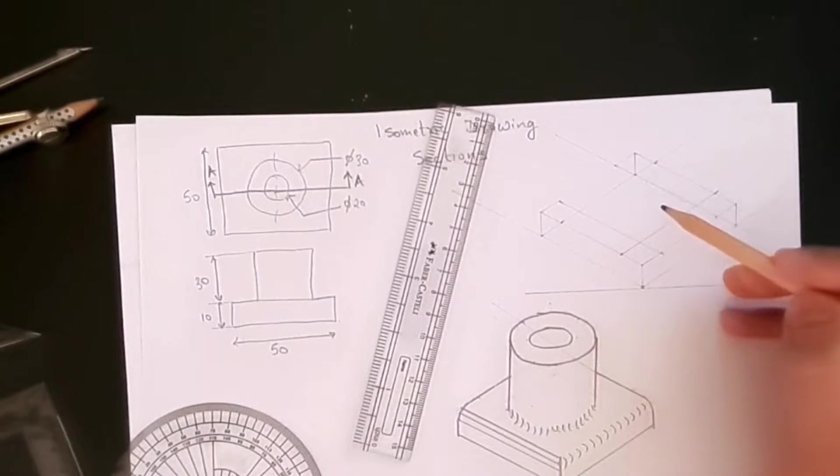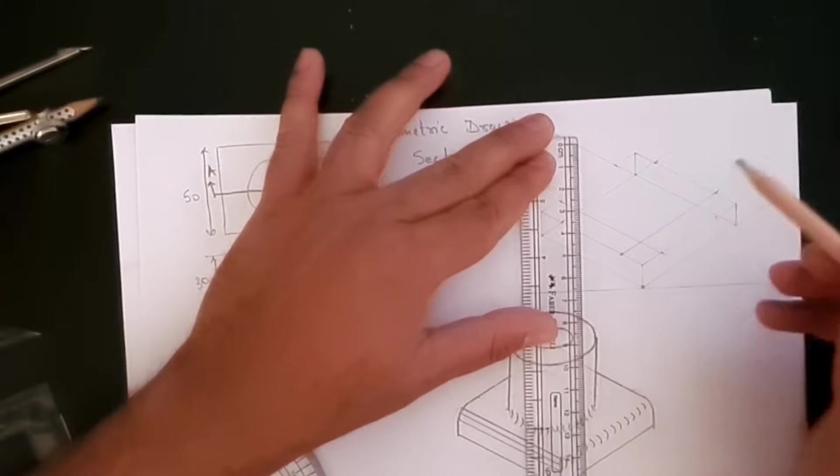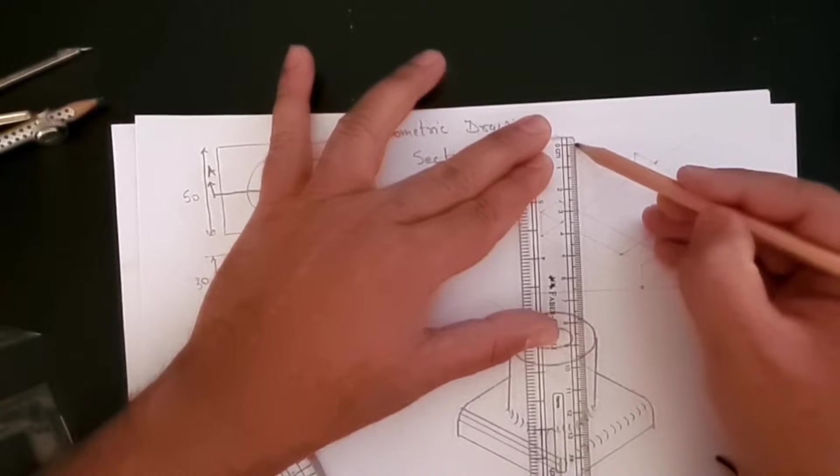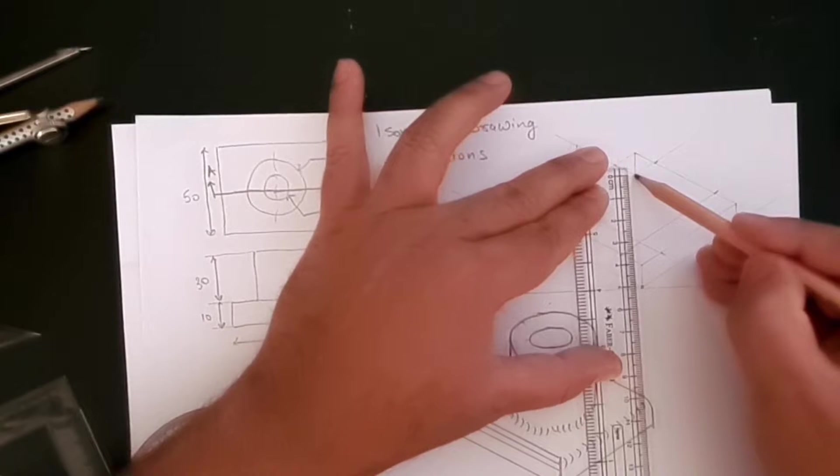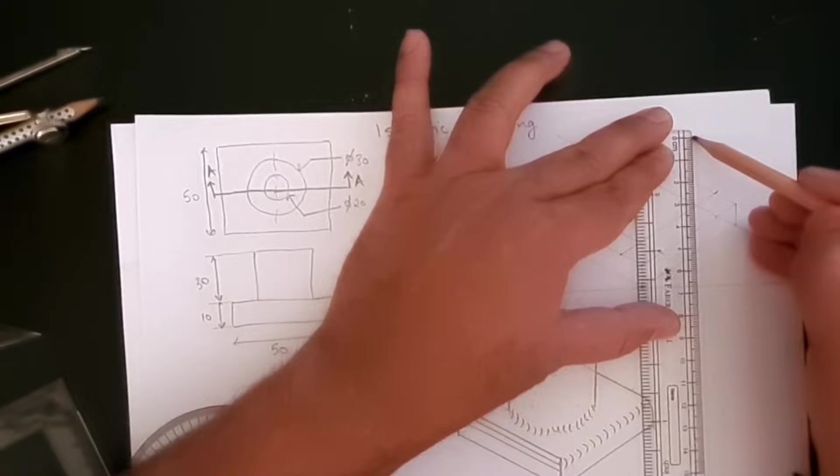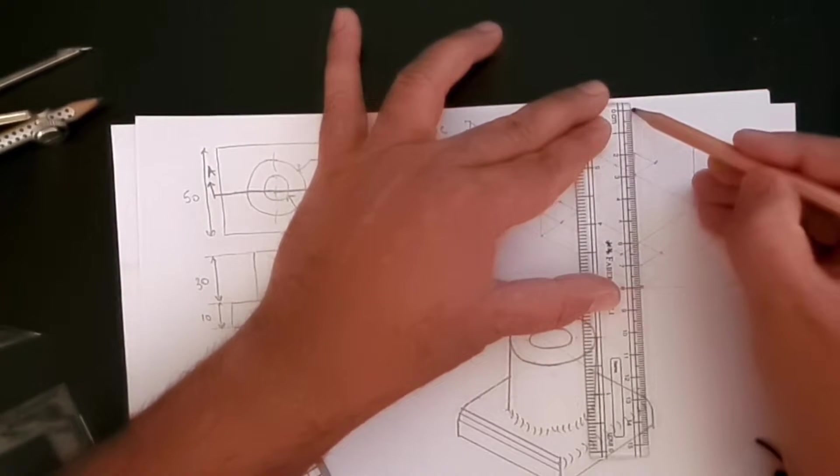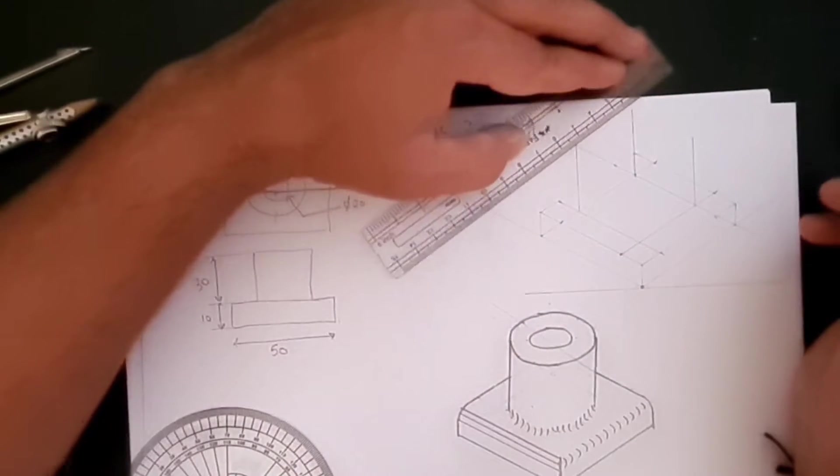So we have the bottom square. Let's go up by 30 millimeters. 30 here, we'll terminate somewhere here. 30 here, and 30 here. And then let's draw that square.